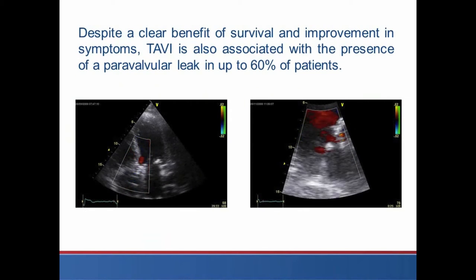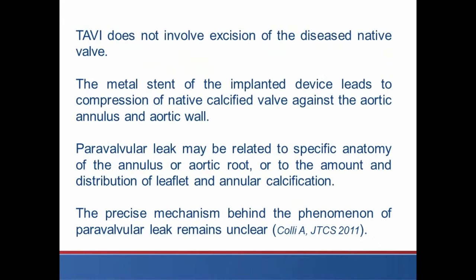Despite a clear benefit of survival and improvement in symptoms, TAVI is also associated with the presence of a paravalvular leak in up to 60% of patients. TAVI does not involve excision of the diseased native valve; the metal stent of the implanted device leads to compression of the native calcified valve against the aortic annulus and aortic wall. Paravalvular leak may be related to specific anatomy of the annulus or aortic root, or to the amount and distribution of leaflet and annular calcification. The precise mechanism behind the phenomenon of paravalvular leak remains unclear.